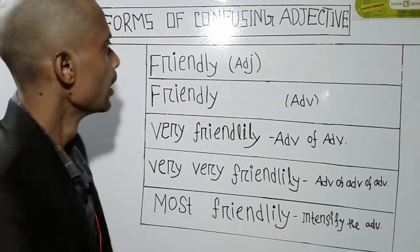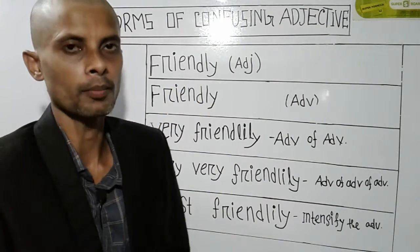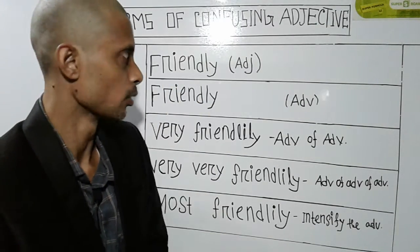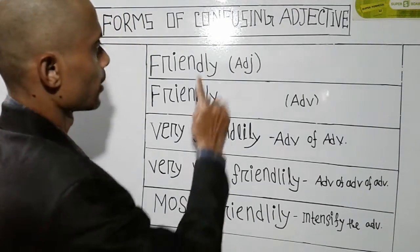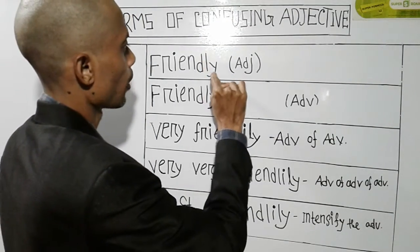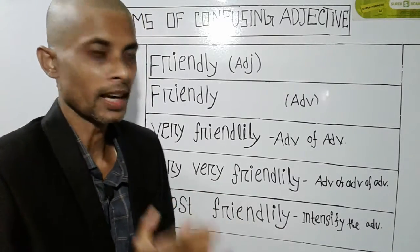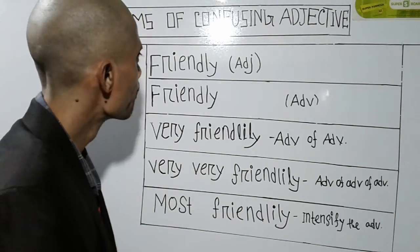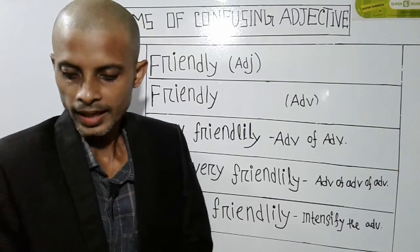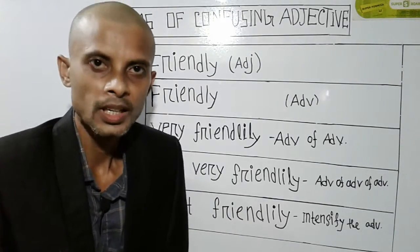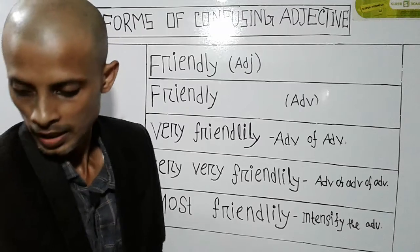Let's try to do it. Friendly means that it is an adjective. We know that it is also called an adverb. That means it can be called an adverb. The answer is called an adverb.